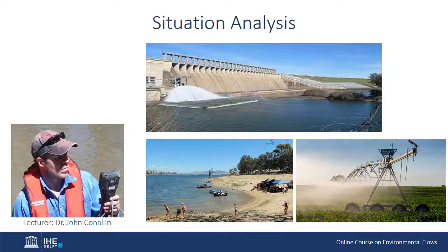The dam is the largest and most important dam within the Murray-Darling Basin, which is Australia's food bowl. It was originally constructed to bring water security to the downstream water users along the length of Australia's longest river, the mighty Murray River. This is a region where the majority of Australia's food is grown using irrigated agriculture with water stored from this dam.